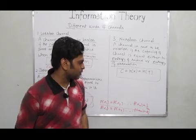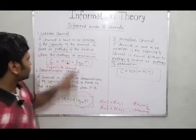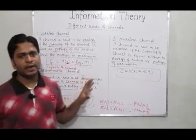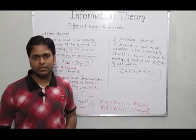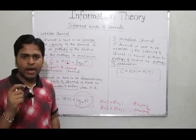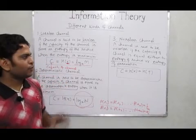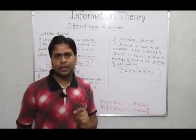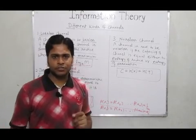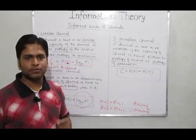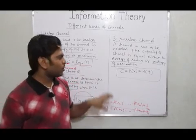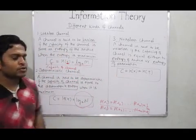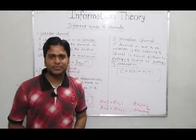These are the important channels in information theory. What you have to remember is how to compute the capacity of each channel. You can compute the capacities of each channel only through the expressions we have obtained here. This is all from this lecture.